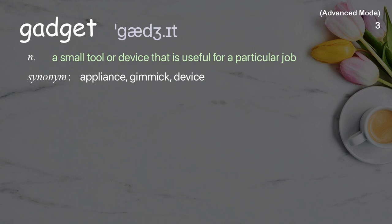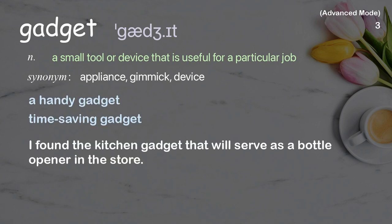Gadget: A small tool or device that is useful for a particular job. Examples: a handy gadget, time-saving gadget. I found the kitchen gadget that will serve as a bottle opener in the store.